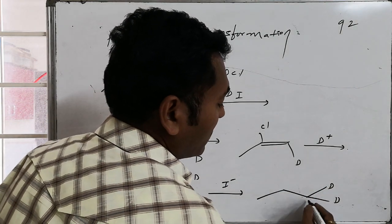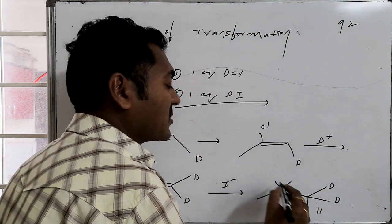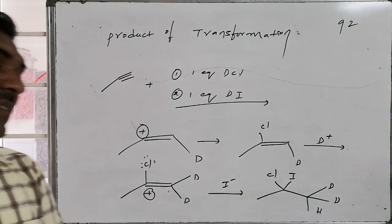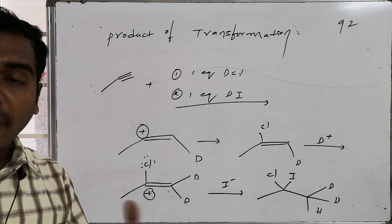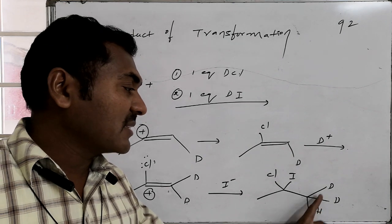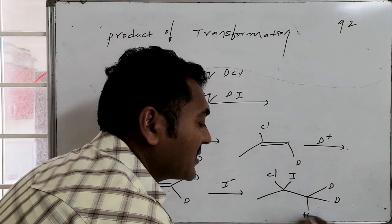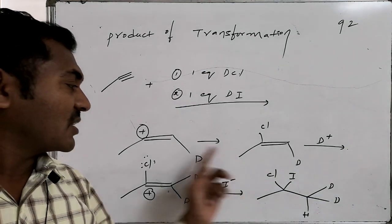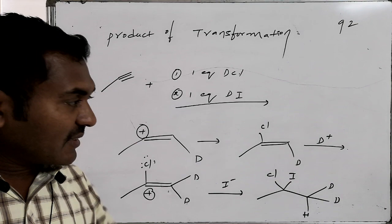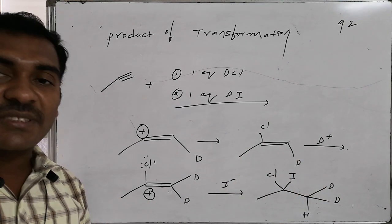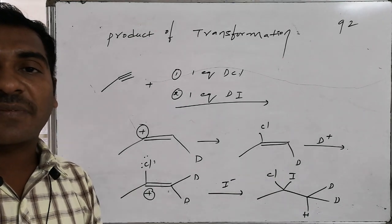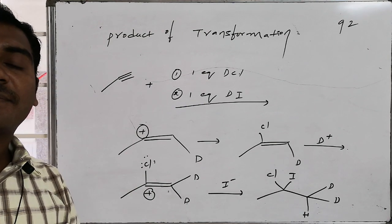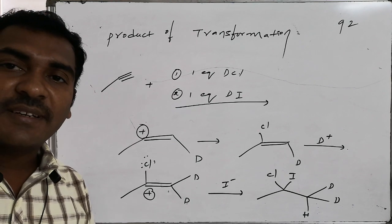When the second equivalent of DI is added, D+ (analogous to H+) again initiates the reaction, forming the most stabilized cation. Iodide (I minus) then attacks as nucleophile. The result is a product where the middle carbon carries a Cl group and an I group, while the terminal carbon has two deuterium atoms and one hydrogen atom. This occurs because D+ forms the most stable carbocation, Cl minus attacks first, then D+ again forms the next stable cation, and I minus attacks — giving the final expected product.